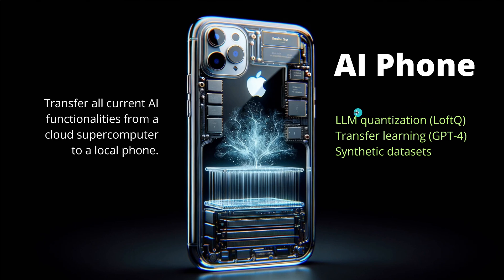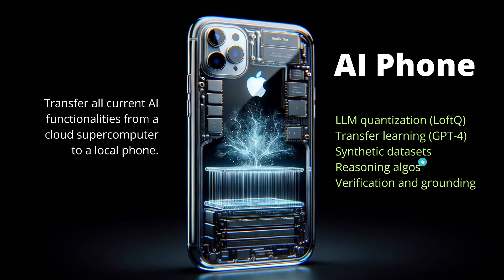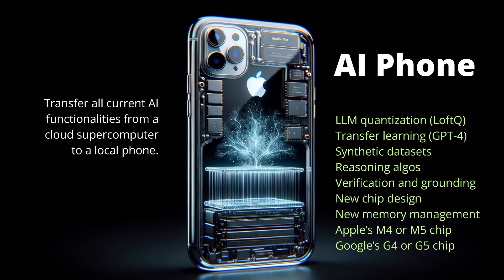First, our large language model AI system components have to be small — really small. We are talking about LLM quantization effects. We are talking about transfer learning from our monster GPT system — we cannot afford to have 100 GPUs running in the background. We have to extract the knowledge from GPT-4, use synthetic datasets generated by that monster GPT system optimized for the task at hand, integrate reasoning algorithms, and have verification and fact-based grounding. This means a completely new chip design and new memory management, as I showed in my last video — we're talking about Apple's M4/M5 chip in one to two years.